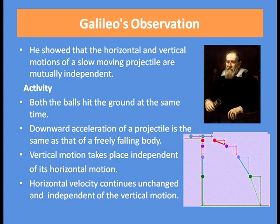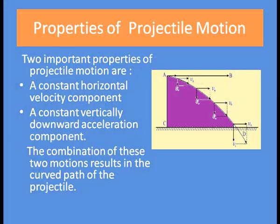The two important properties of projectile motion are a constant horizontal velocity component and a constant vertically downward acceleration component. These two combinations of motion result in the curved path of the projectile. You can see in the figure that the path of the projectile is a curved one.